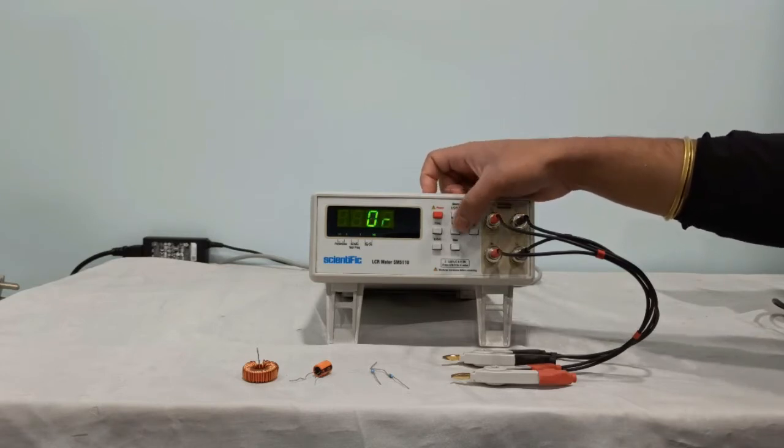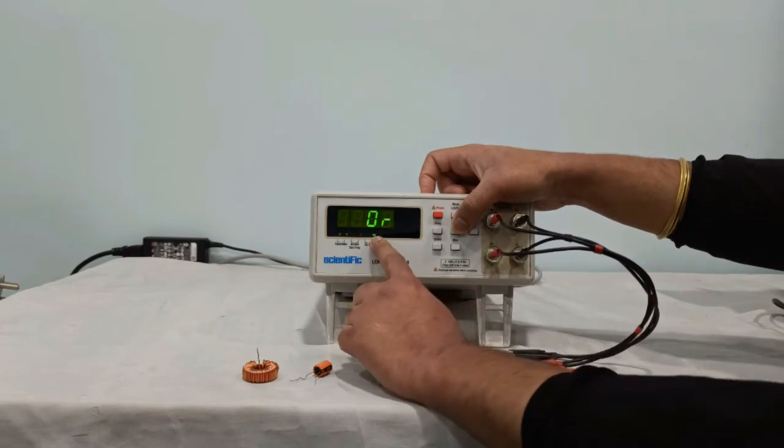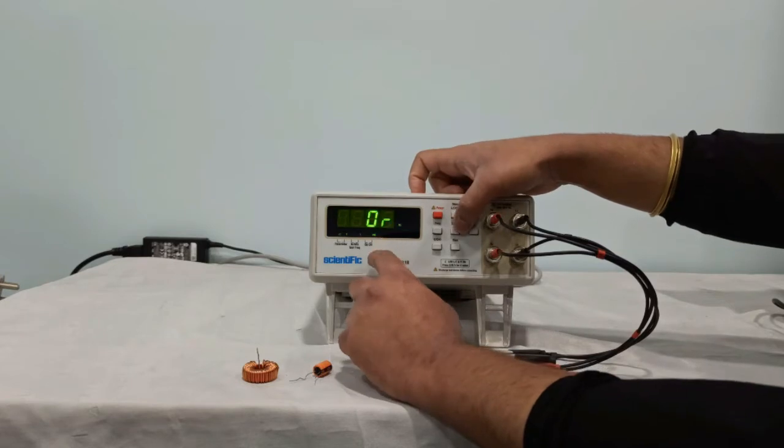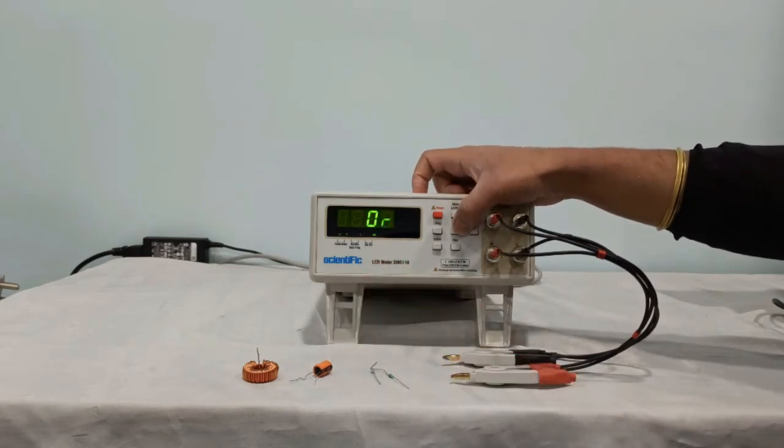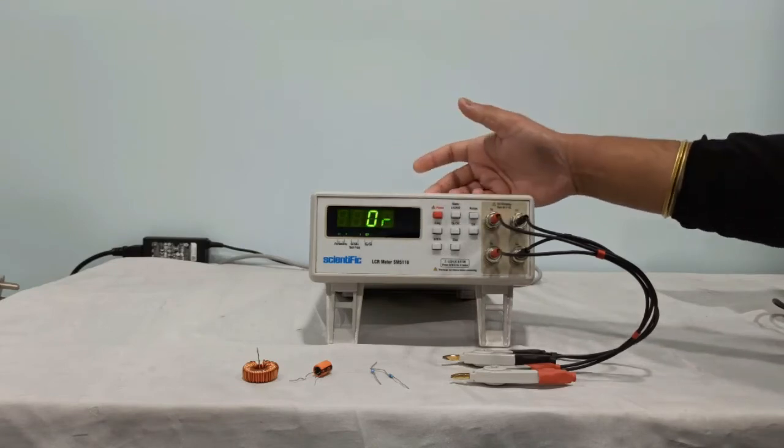Next is equivalent circuit. This is for series and parallel. Now it is displaying PAR, it means parallel. To switch it to series, you can press this switch once. So now it has gone to series mode. This is how you can change the equivalent circuit.